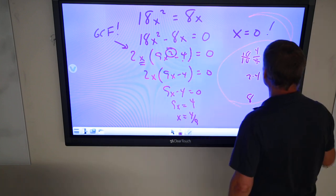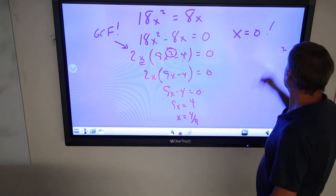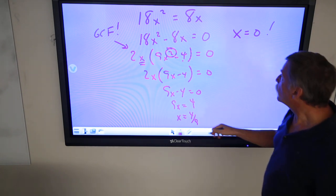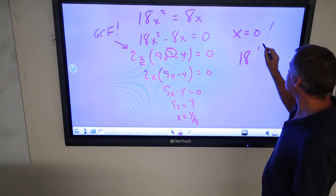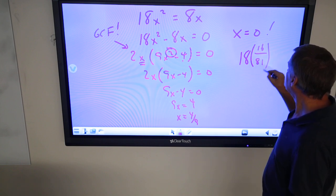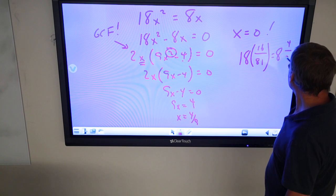Well, let's test it and see here, alright. So, 4/9, if I go 18 times 4/9 squared, that's 16 over 81, should equal 8 times 4/9.